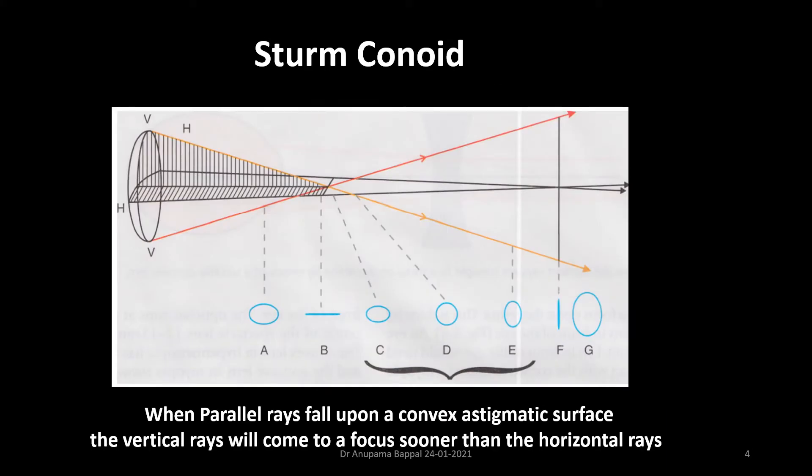So what is Sturm's conoid? When parallel ray of light fall on a convex astigmatic surface, the vertical ray of light would converge first and then the horizontal ray of light. That is because the vertical curvature is more curved, so it would converge the ray of light much faster than the horizontal surface.